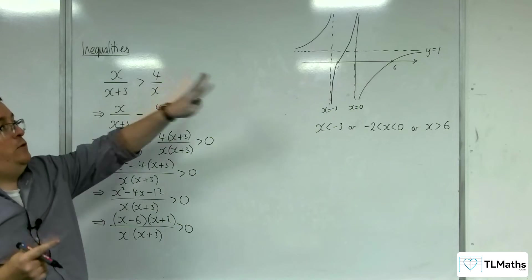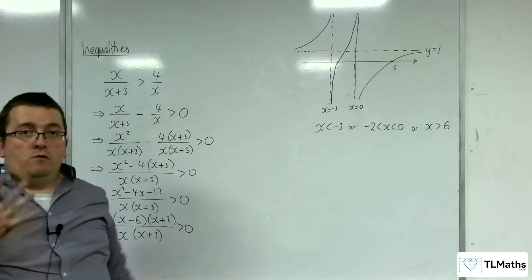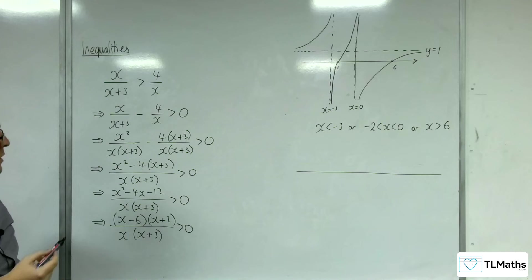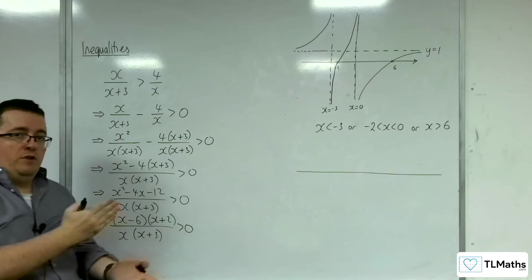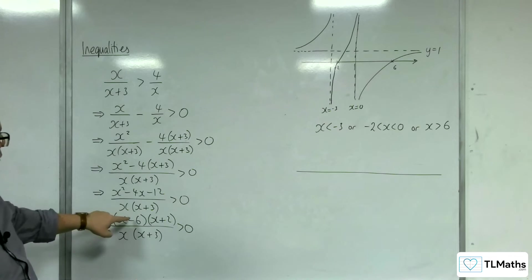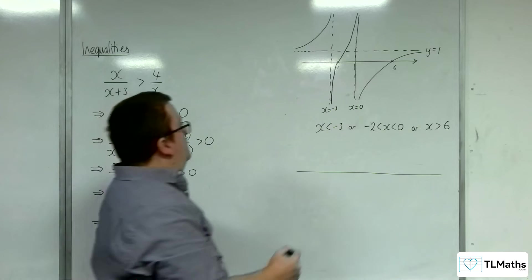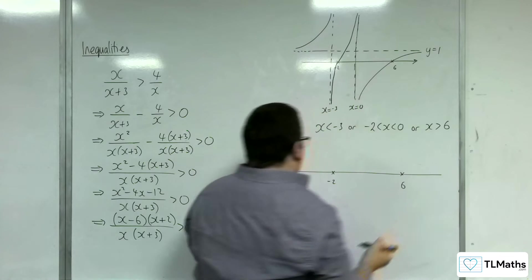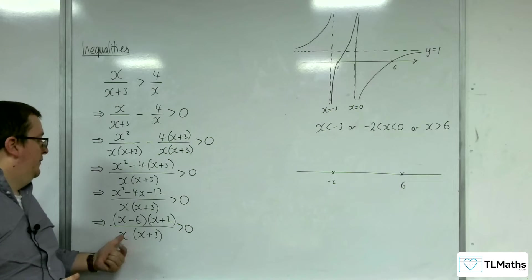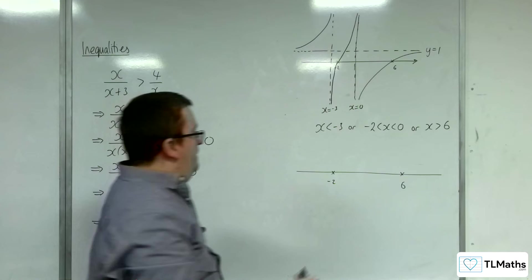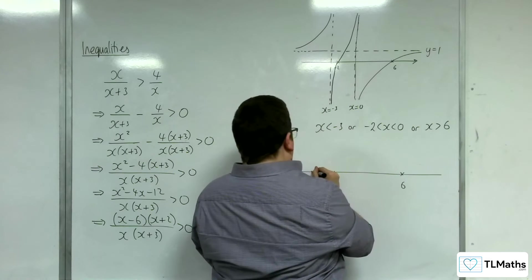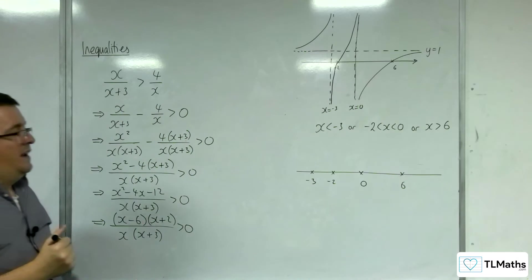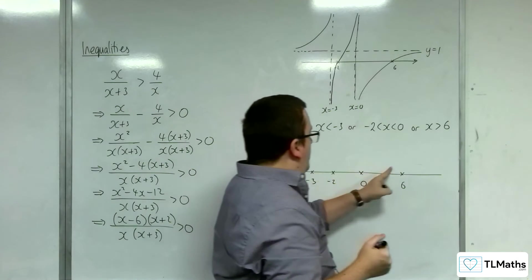Now, if you didn't want to sketch the graph like I did, remember you can use the number line approach. So the number line approach, what you want to do is you want to identify where the critical points are, what you need to consider. So you've got 6 and minus 2. So you've got minus 2 and 6. And you also want to consider where the asymptotes are. So 0 and minus 3. Okay, so minus 3 and 0. So then you want to check each of the regions.